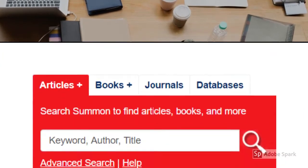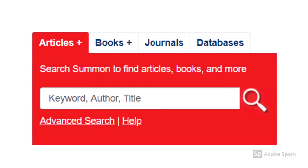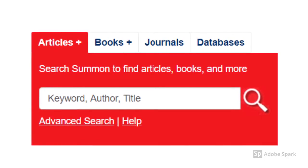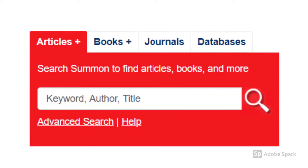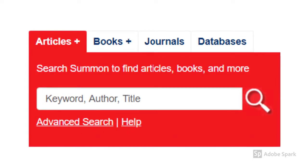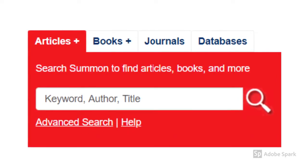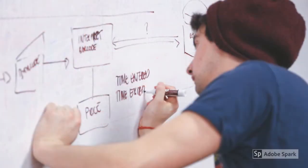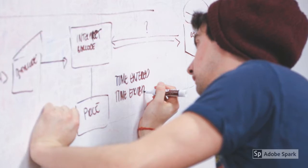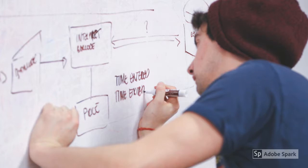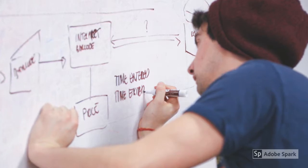When you conduct academic research, a term you might often see is keyword. So what exactly are keywords? Basically, keywords are the search terms you will use to describe your research topic. They are the most important words and concepts that researchers and writers use when they study your topic.